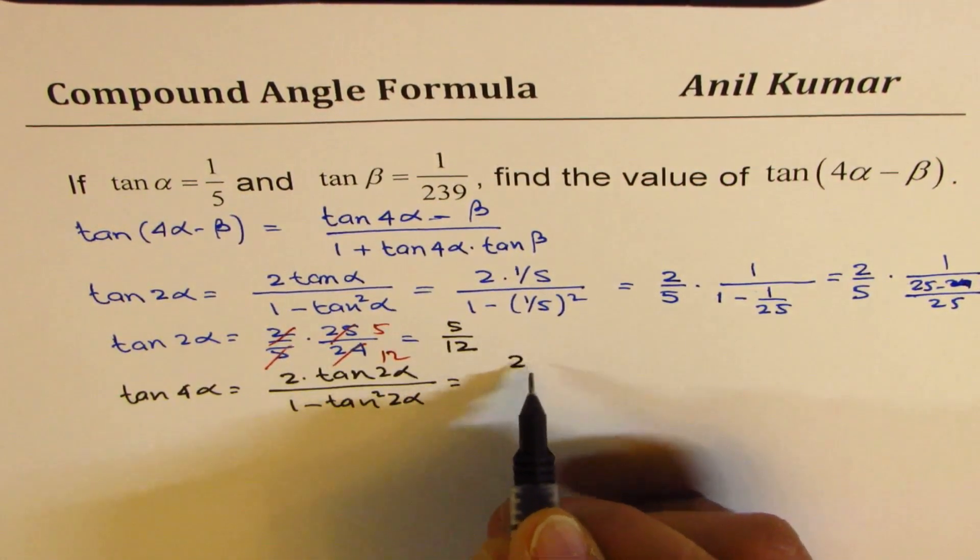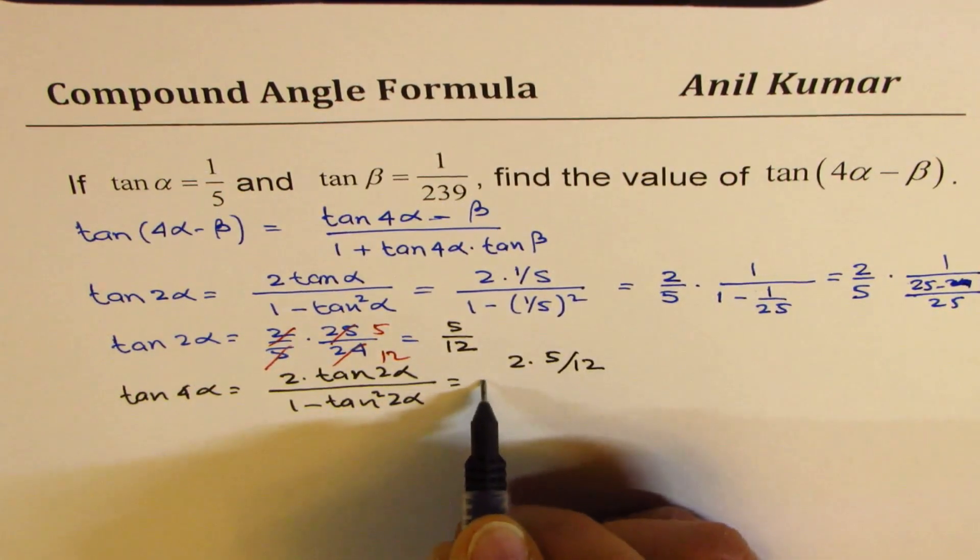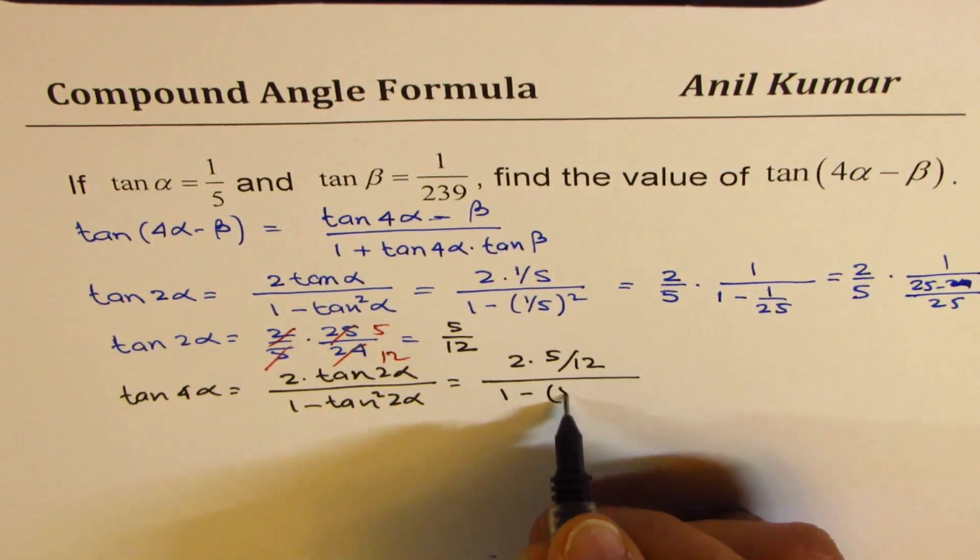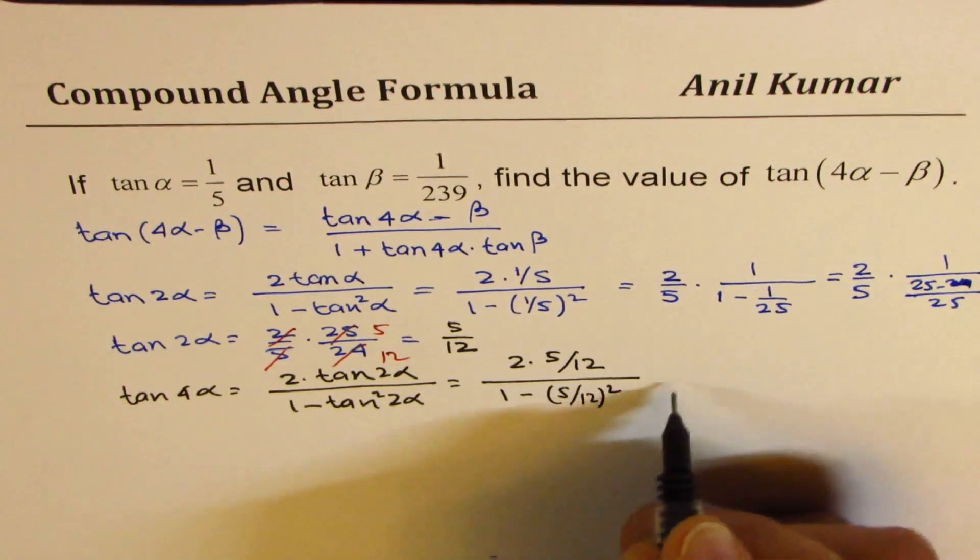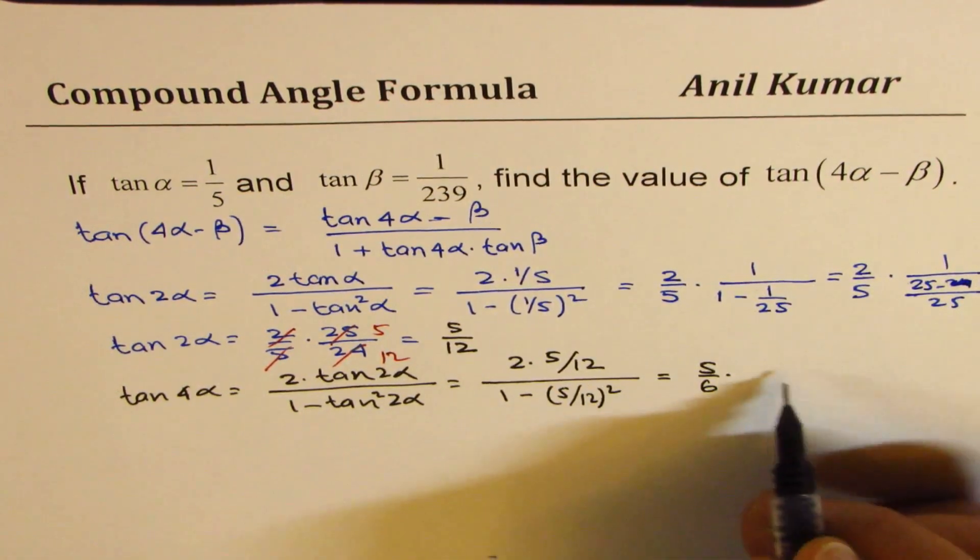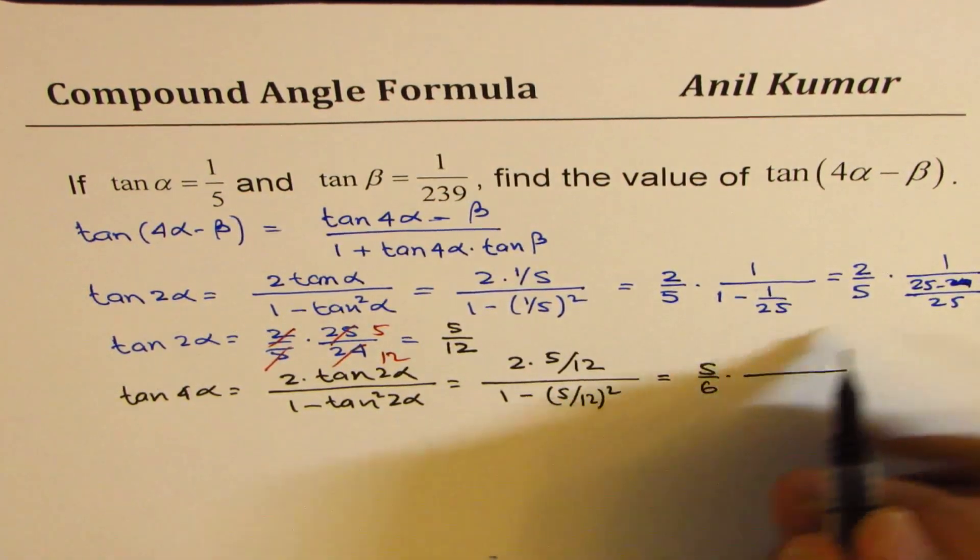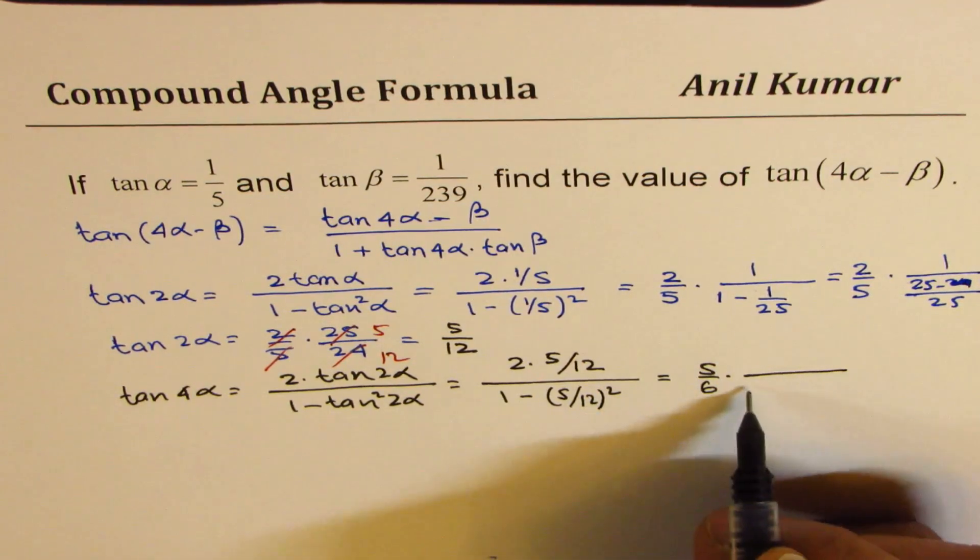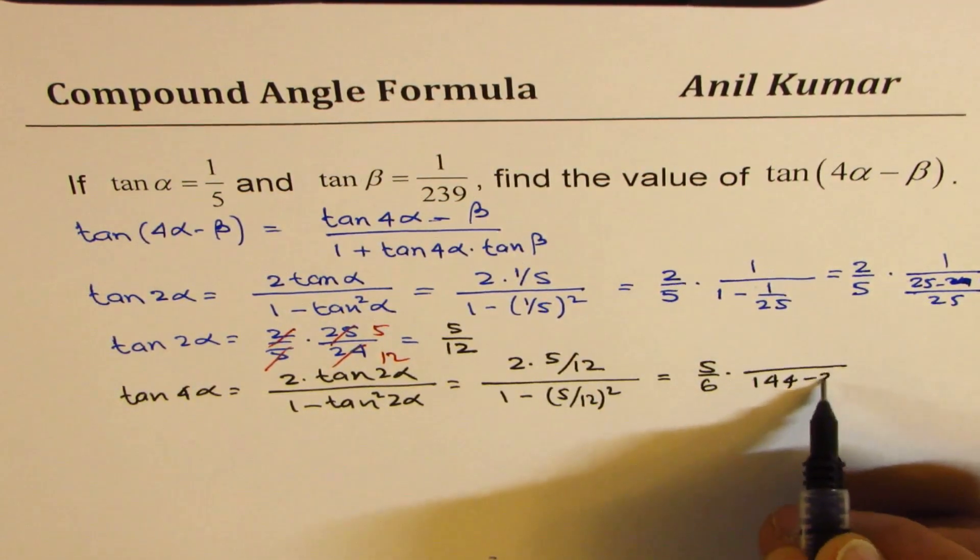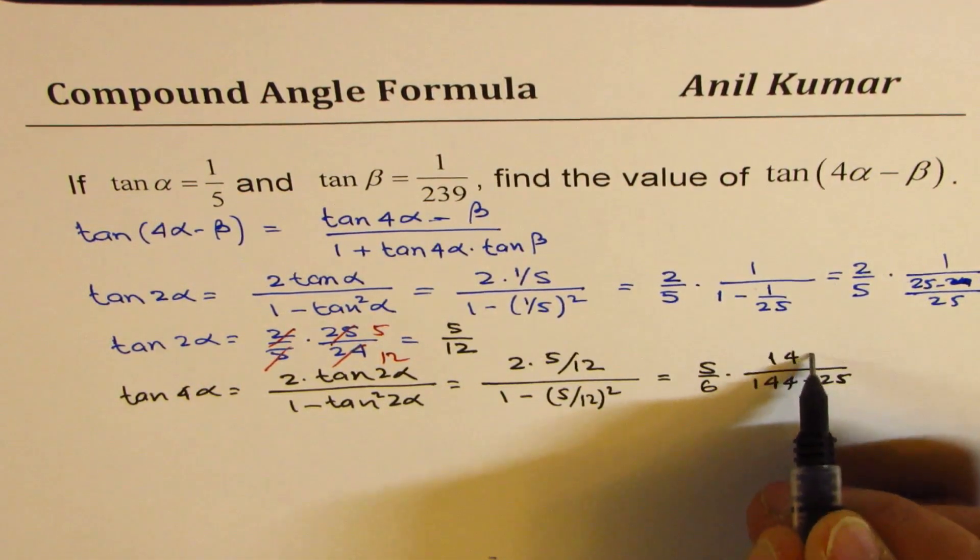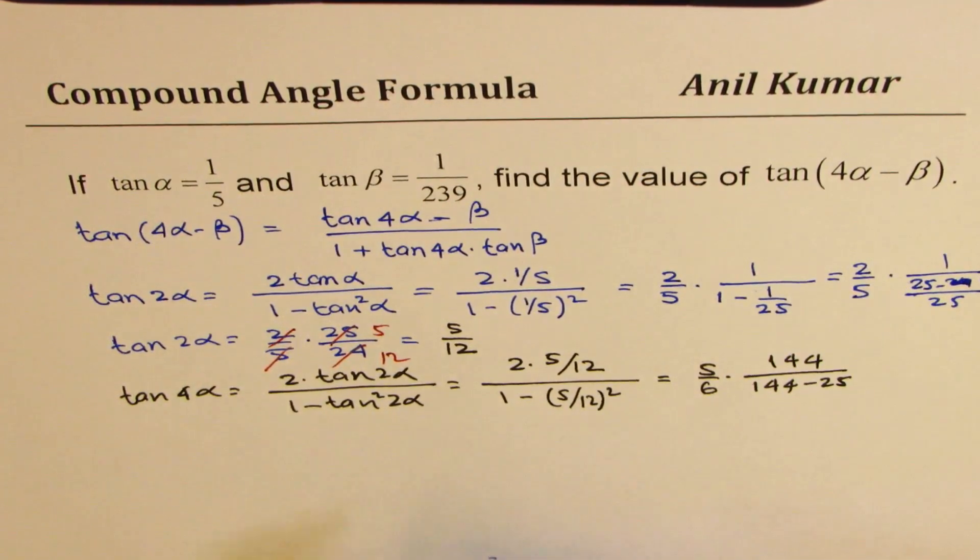Which is 2 times 5 over 12 divided by 1 minus 5 over 12 whole square. Now I could cancel this, writing this as 5 over 6. And on this side, let me cut down a few steps this time. We know 144 is 12 square minus 25, and that 12 square comes in the numerator. Perfect. So I just made one step less.